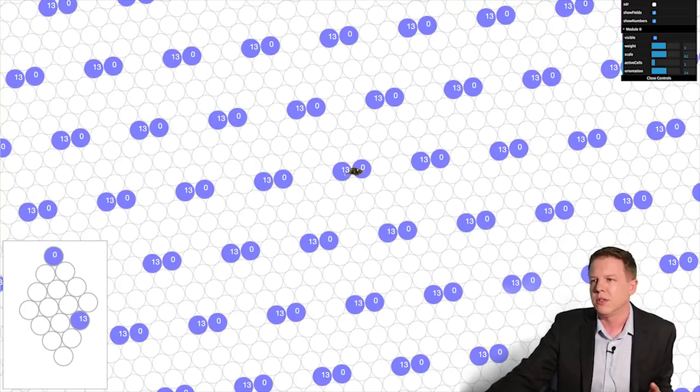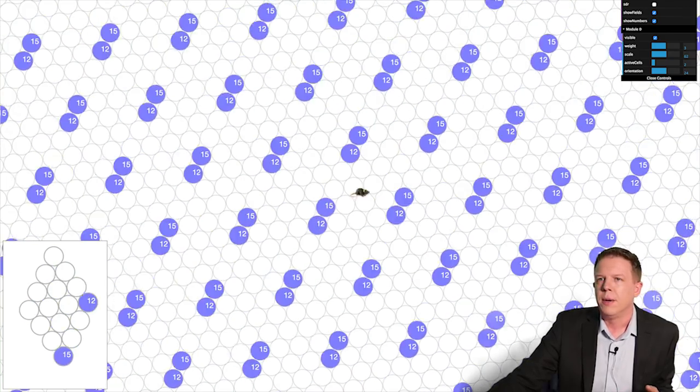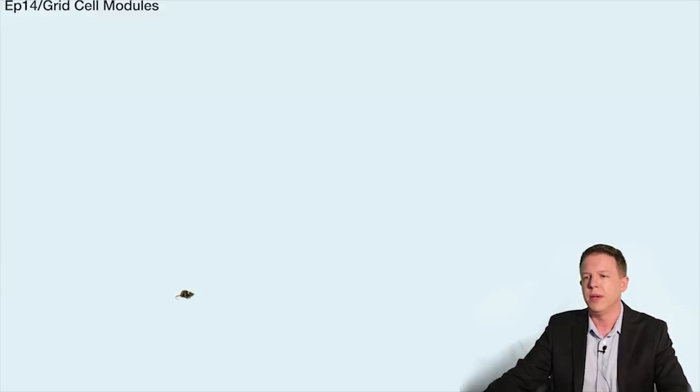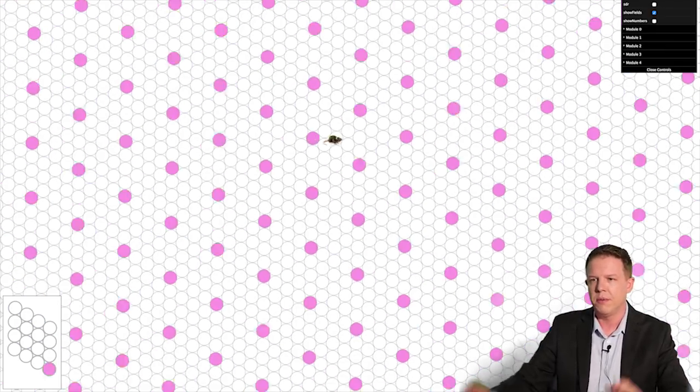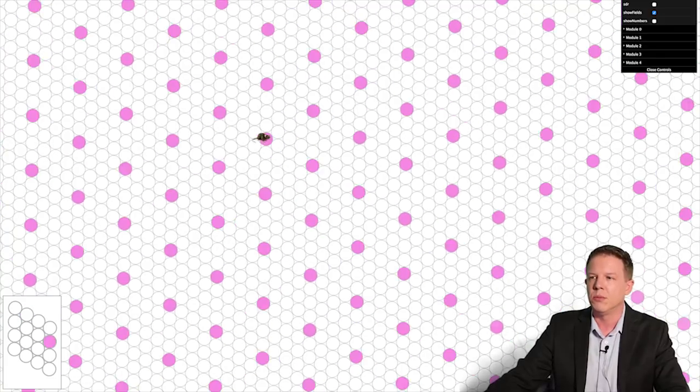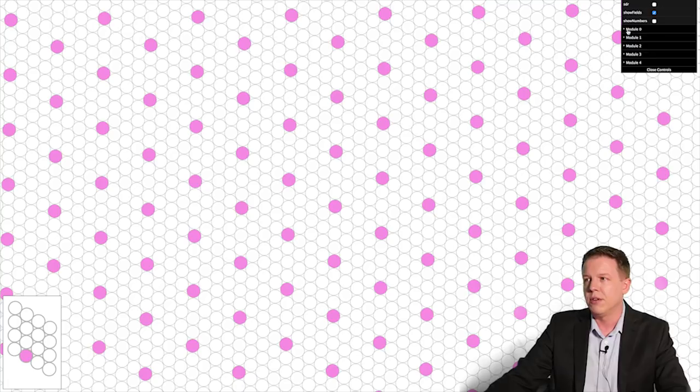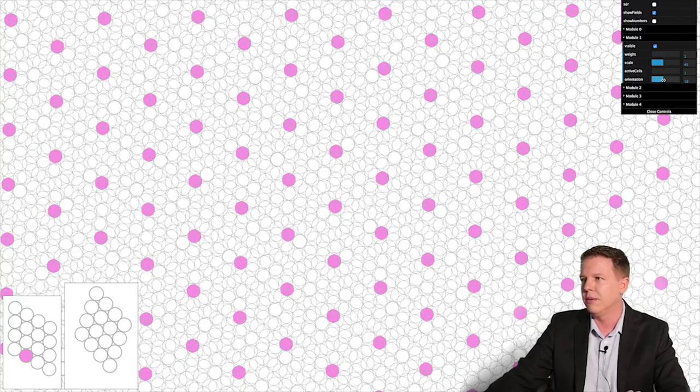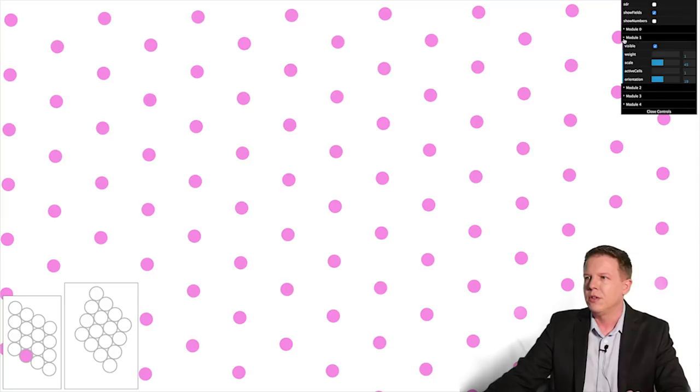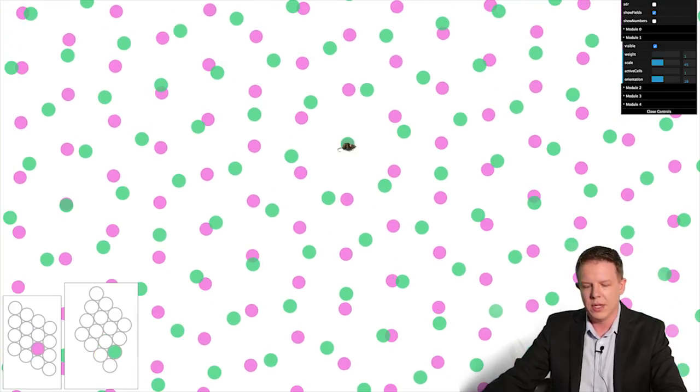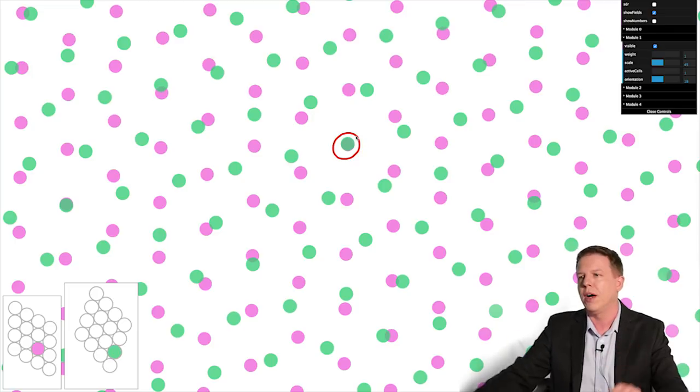But what I really want to show you is many grid cell modules working together to represent a space. So here's an example again of just one grid cell module. And I've made it pretty small so you can see this example. As the mouse moves, we don't know exactly where it is. We just know it's in one of these dots and it's moving through space. Now if I add another grid cell module to the mix, and I'm going to change its orientation so it's vastly different, so that makes a difference. I'm going to turn off the lines too. So now I've got two grid cell modules that are kind of interplaying together here. So let's take this example where the mouse is like right around here. I'm going to freeze the screen and we're going to draw a little bit over here.